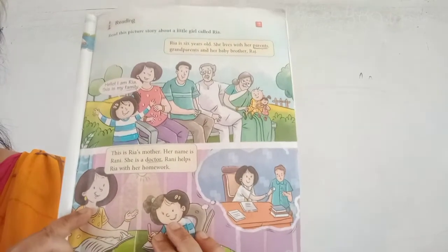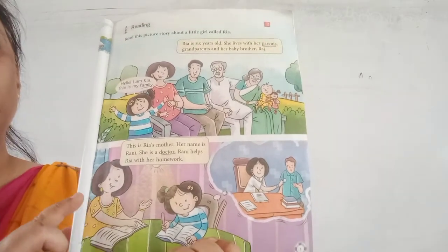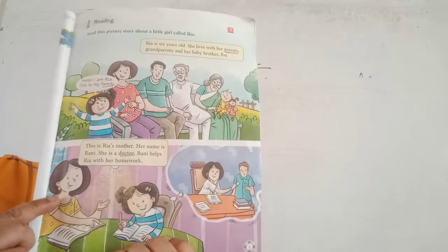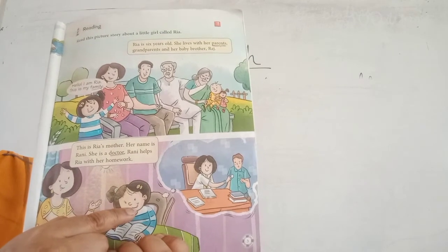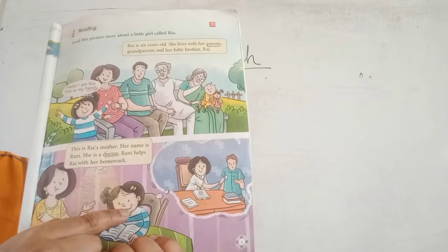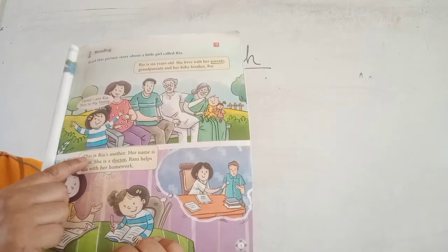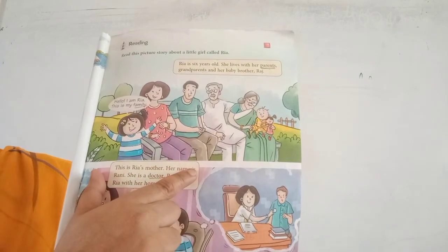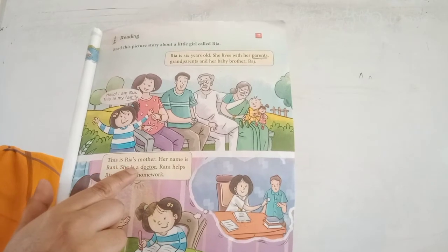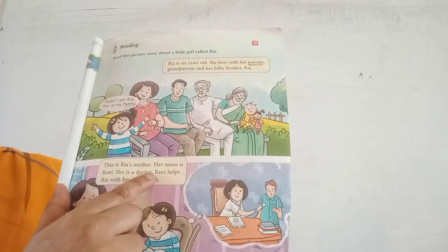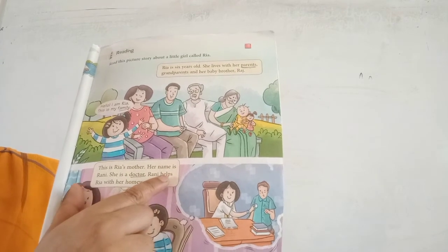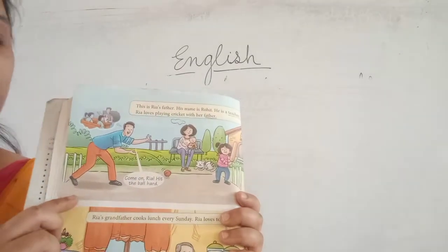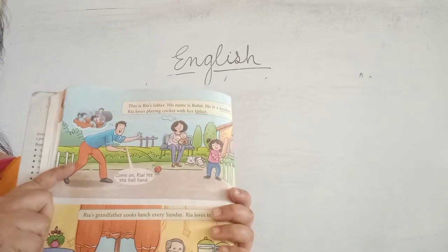Okay. Now the next picture. In this picture we have seen one mother is teaching one girl. She is Ria's mother Rani and she is teaching her child. Now I am reading the line. This is Ria's mother. Her name is Rani. She is a doctor. Rani helps Ria with her homework.